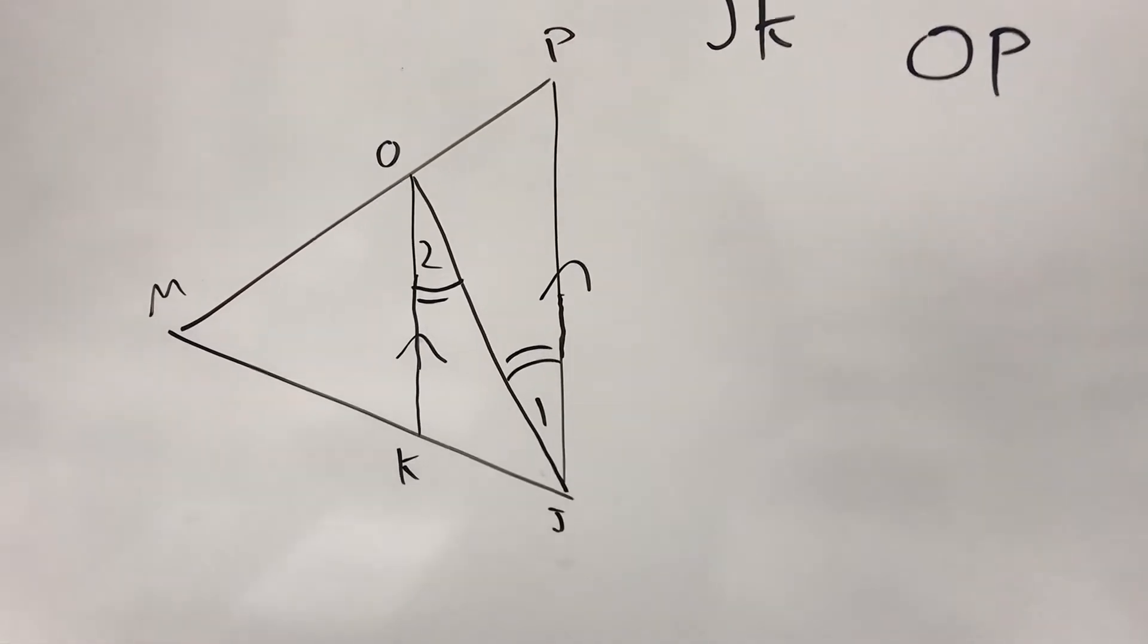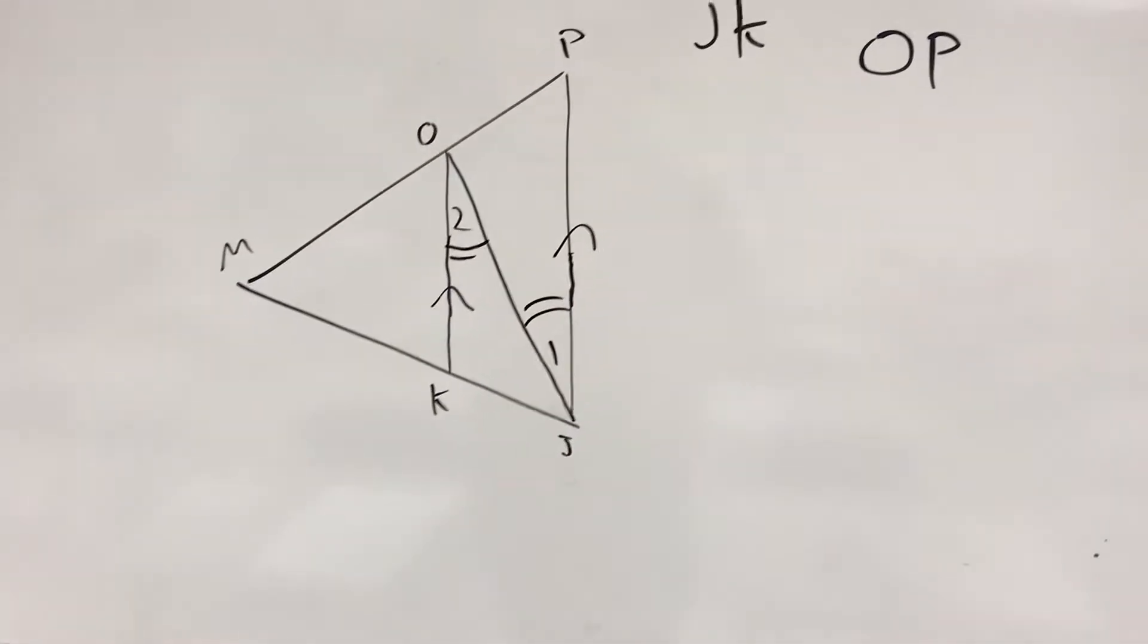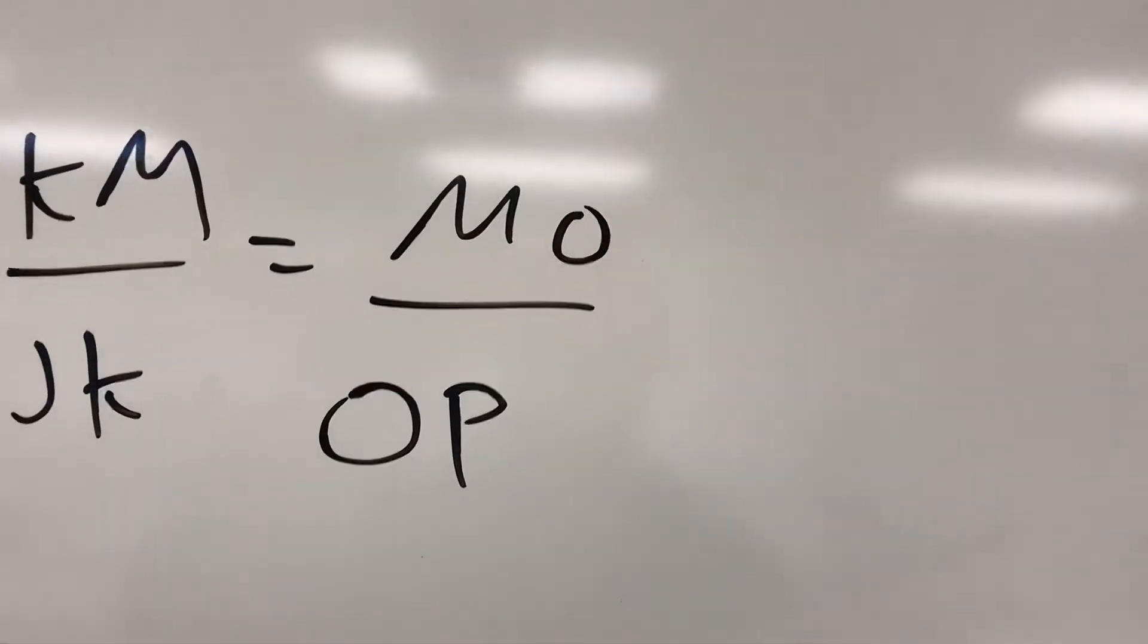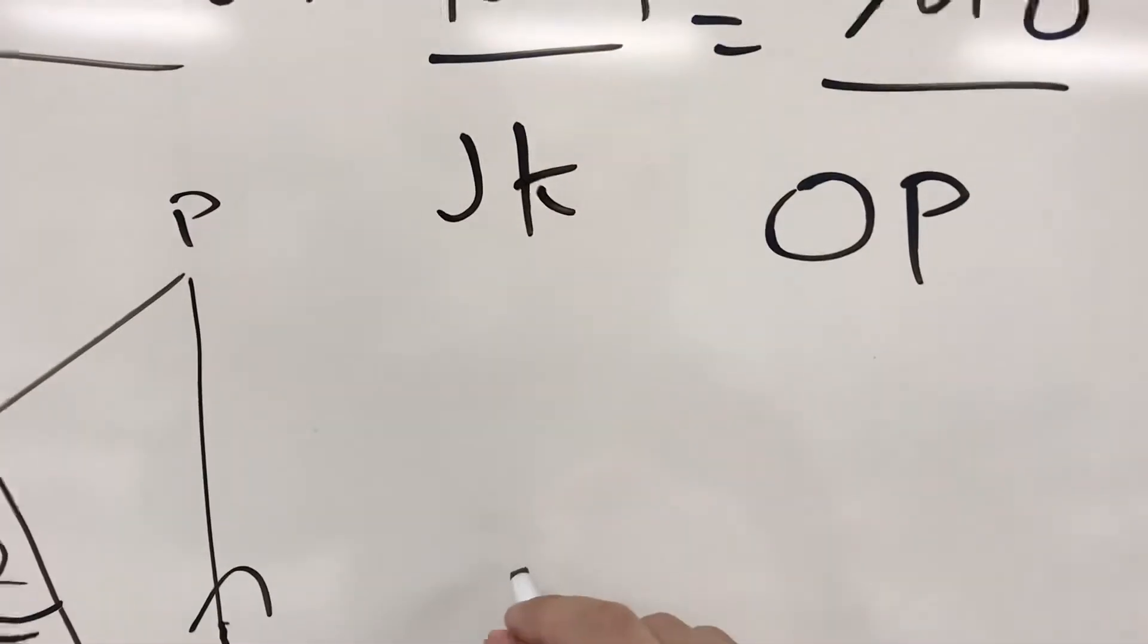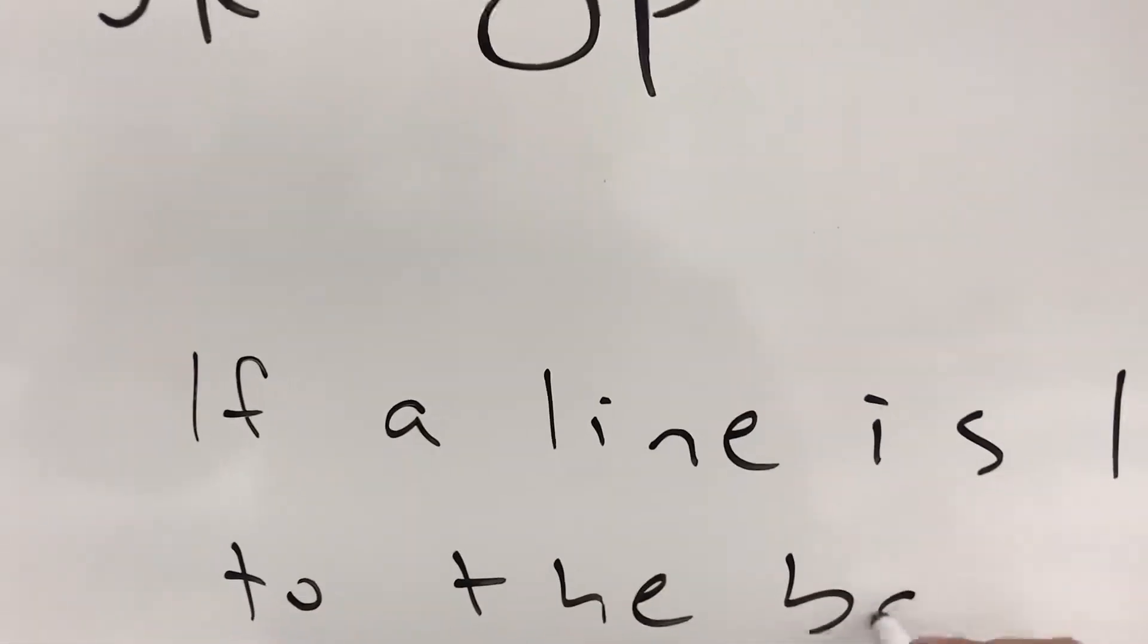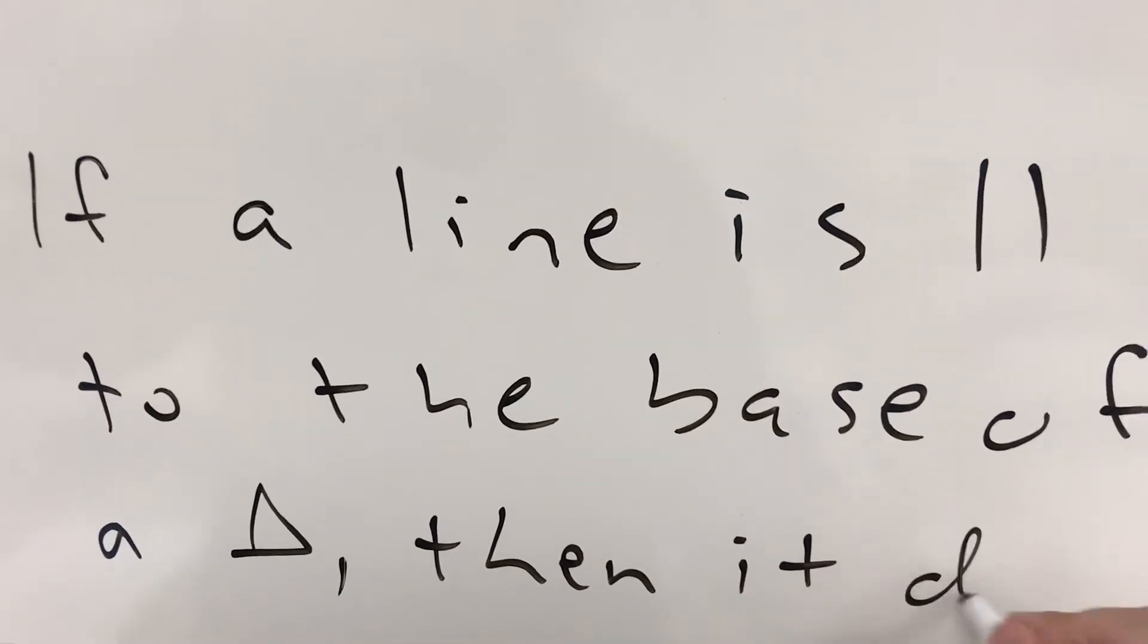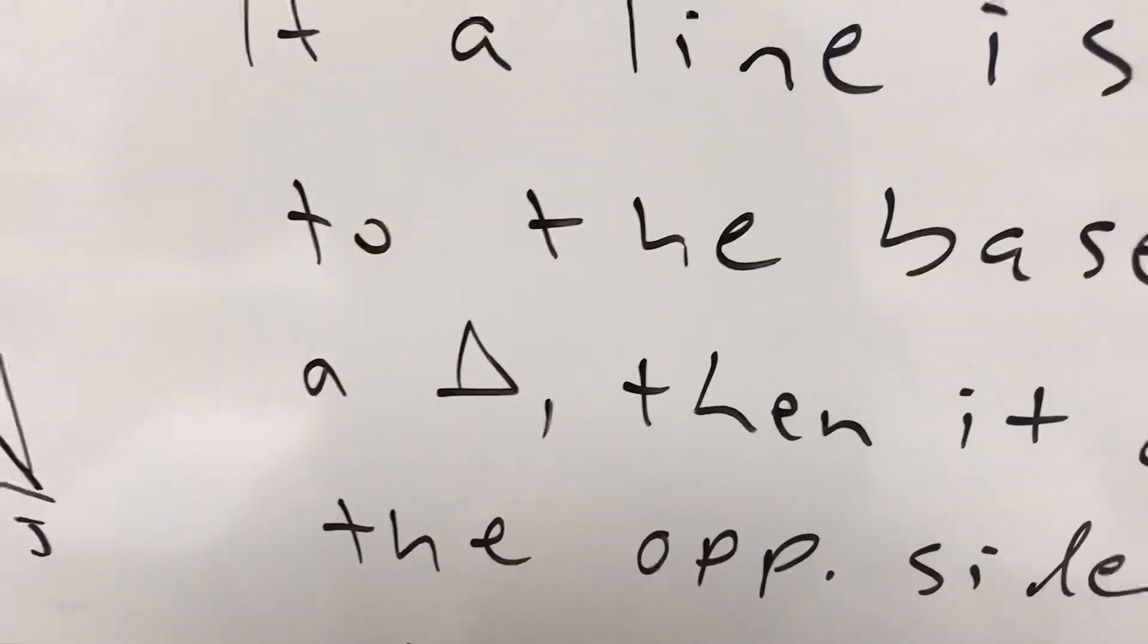And once you do that, the side splitter theorem will come into effect. So you could basically just go straight to the side splitter theorem from this point. You could just go ahead and say that km over jk is equal to mo over op because the wording would say something like if a line is parallel to the base of a triangle, then it divides the opposite sides proportionally.